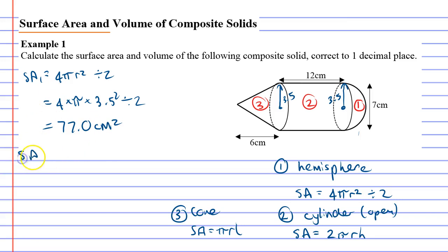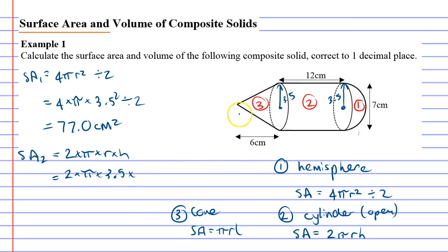Now for surface area 2, our open cylinder: 2 × π × r × h. The radius is 3.5 and the height is 12. So 2 × π × 3.5 × 12 gives us 263.9 cm².